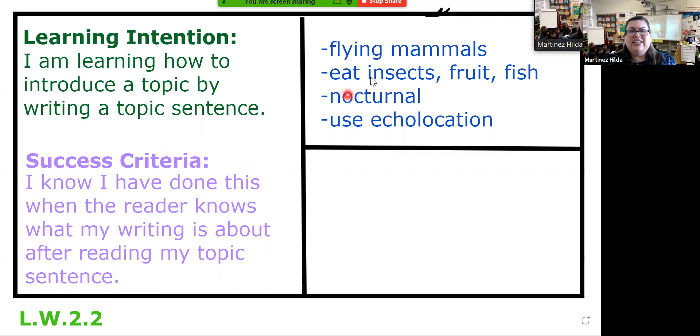Boys and girls, yesterday we read that book on bats and we pulled out lots of key details. I went ahead and wrote some of the key details that you learned about. Here are some of the things that you said were interesting about bats: they're flying mammals, they eat insects, fruit, and fish, they're nocturnal—we learned what that word meant—and they use echolocation. Remember, echolocation is how they use sound waves to see where predators are and how to catch their food.